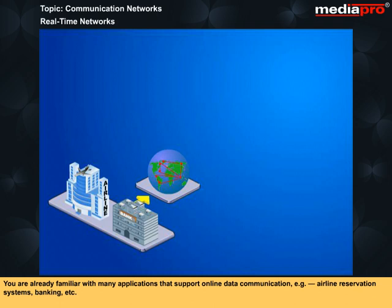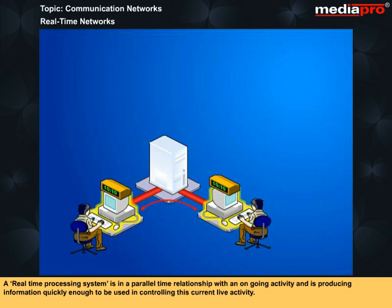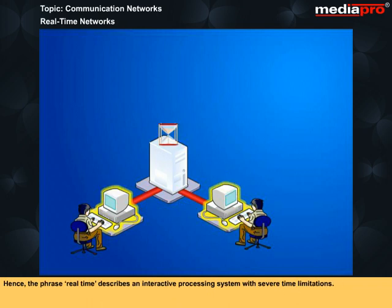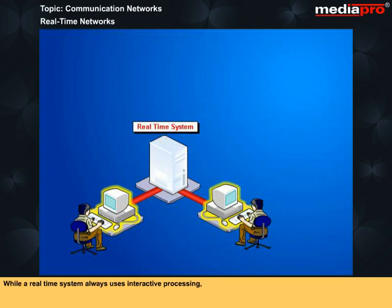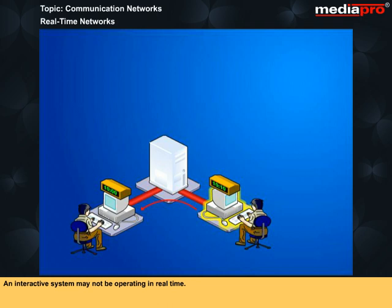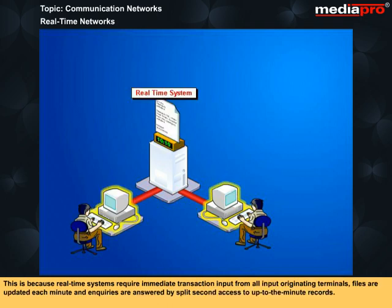You are already familiar with many applications that support online data communication, such as airline reservation systems and banking. A real-time processing system is in a parallel time relationship with an ongoing activity, producing information quickly enough to be used in controlling that current live activity. The phrase 'real-time' describes an interactive processing system with severe time limitations. Real-time systems require immediate transaction input from all input originating terminals, files are updated each minute, and inquiries are answered by split-second access to up-to-the-minute records.